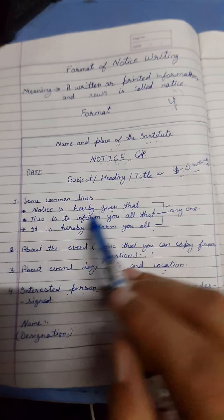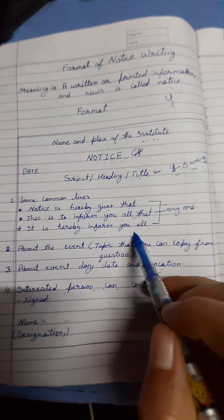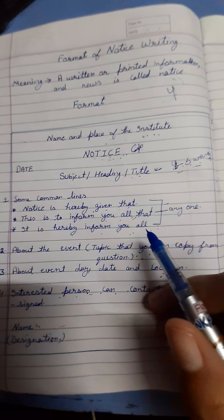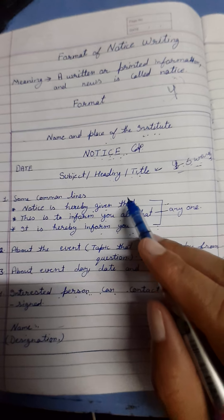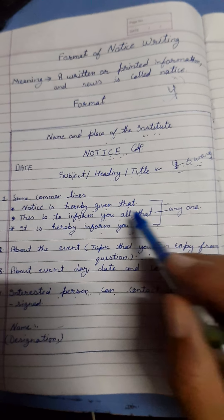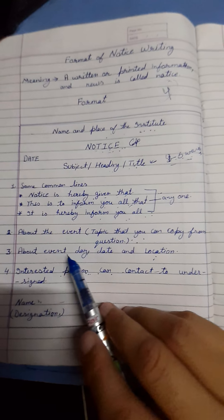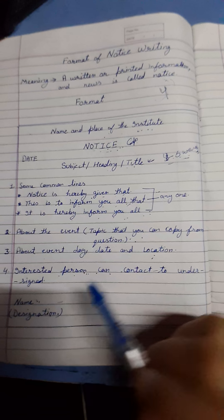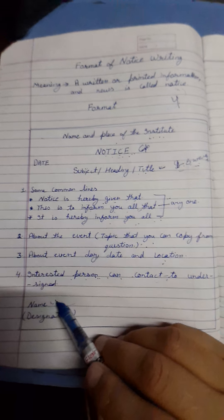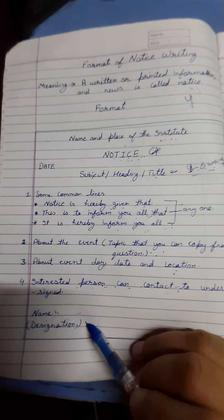For the opening line of the notice body, the options are: 'Notice is hereby given that,' 'This is to inform you all,' or 'It is hereby informed you all.' You are not allowed to write all three lines — you can use only one line to start your notice. Then the third line is about the event, fourth about the day, date and location, and then the line about the interested person and whom they can be connected with.